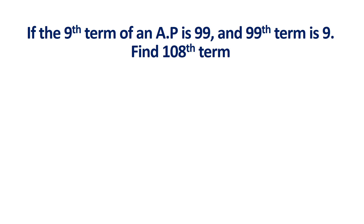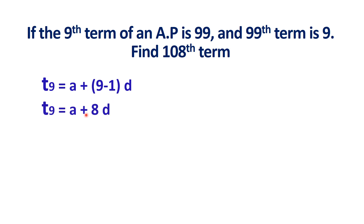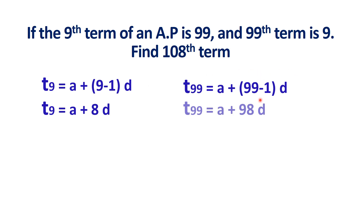If the 9th term of an AP is 99 and the 99th term is 9, find the 108th term. T9 equals A plus 9 minus 1 into D, using the formula TN equals A plus N minus 1 into D. So T9 equals A plus 8D. Similarly, T99 equals A plus 99 minus 1 into D, which gives T99 equals A plus 98D.